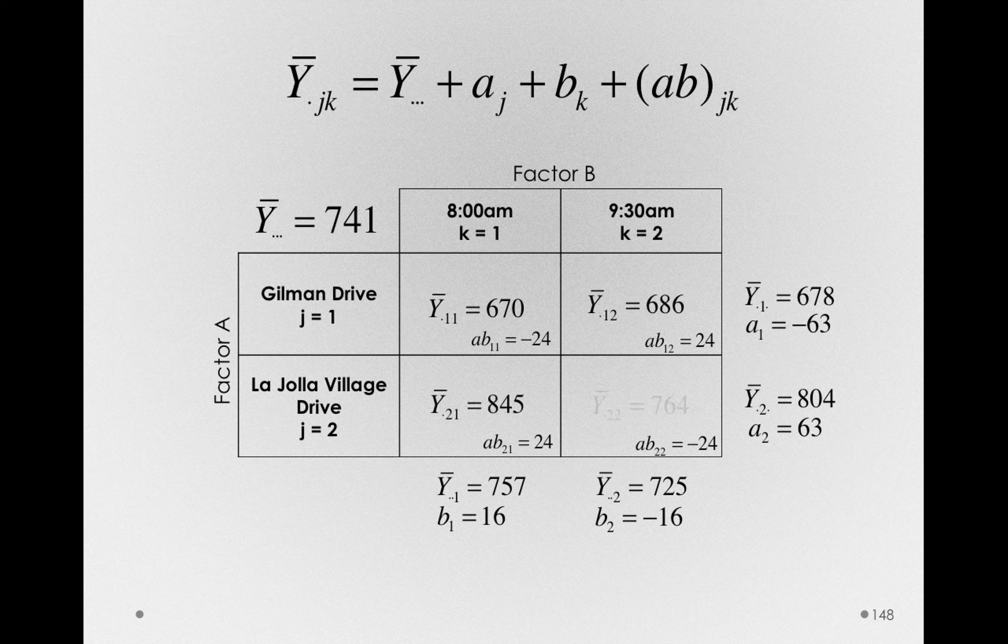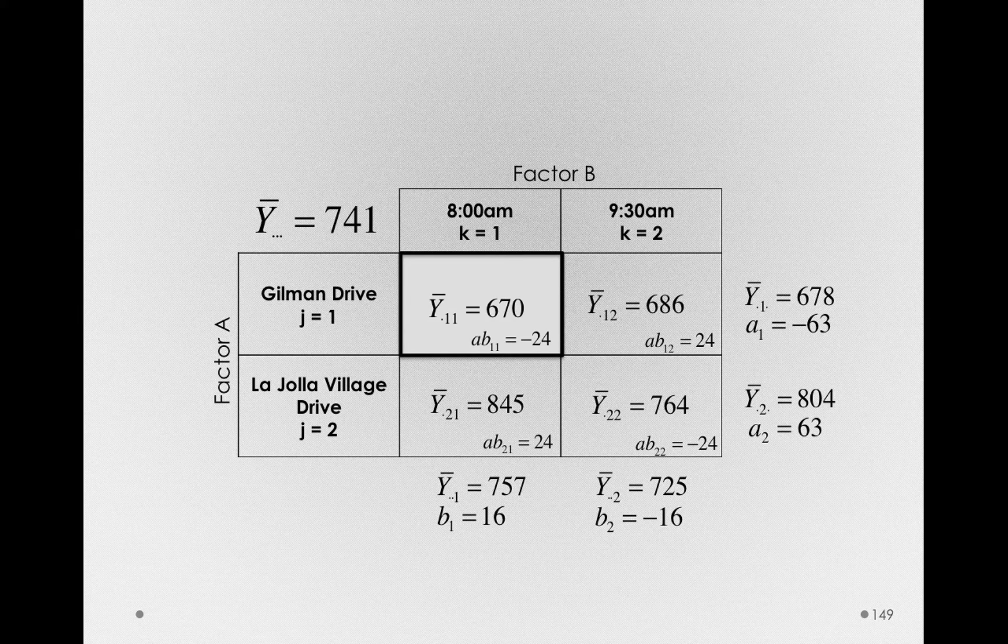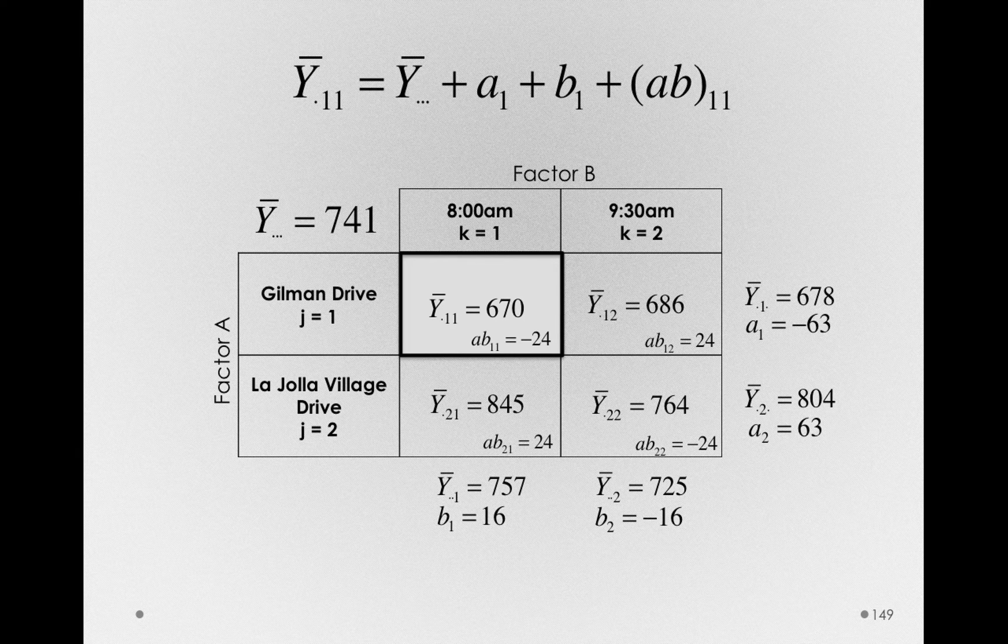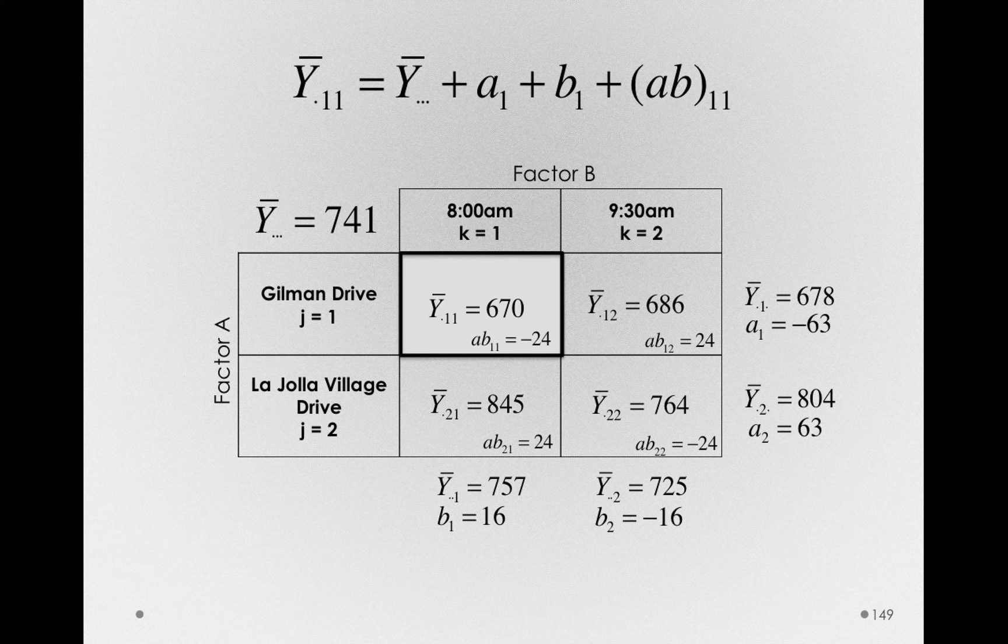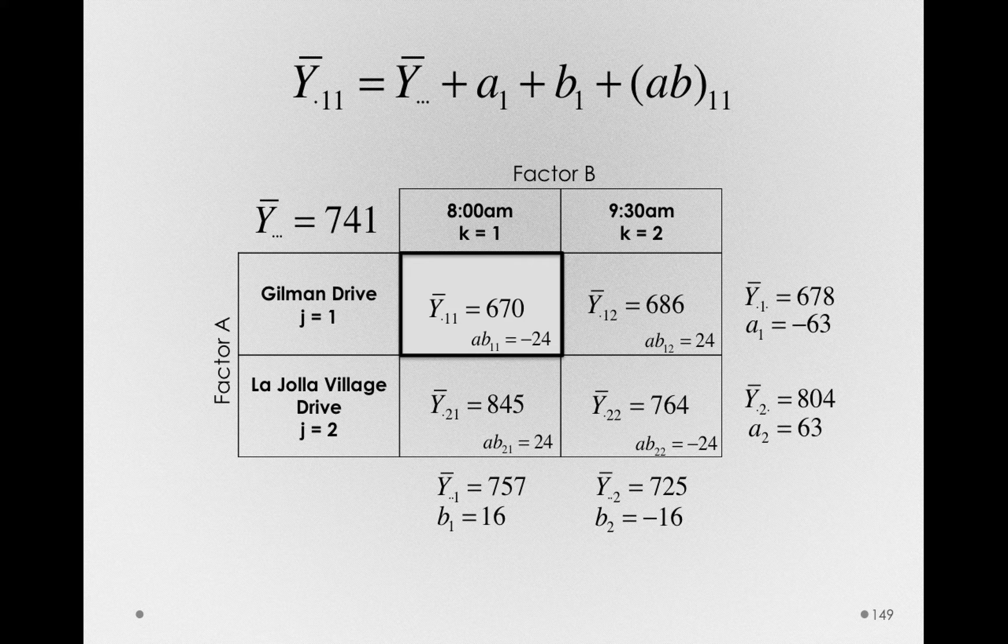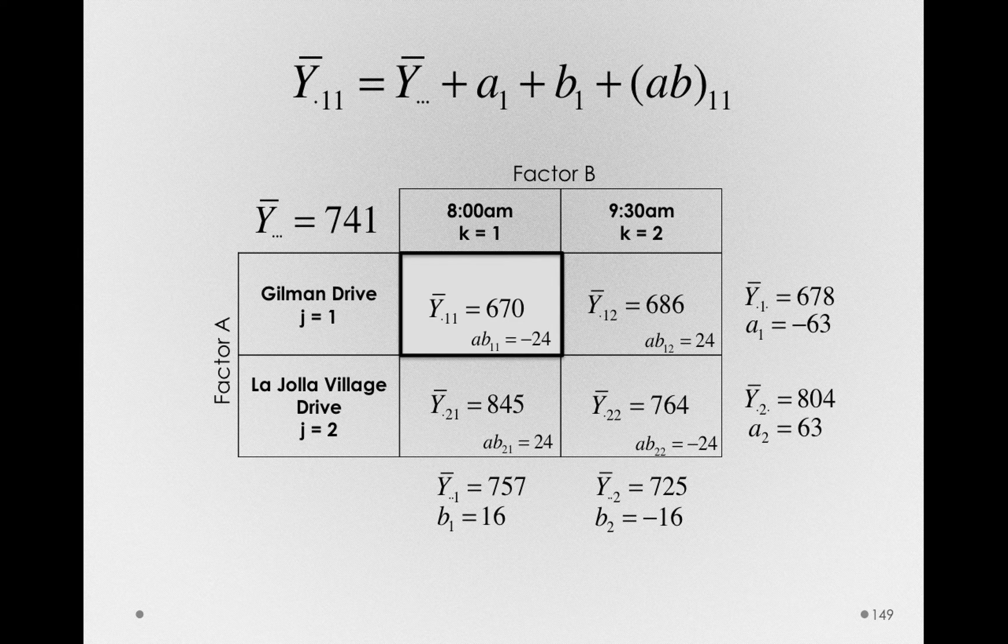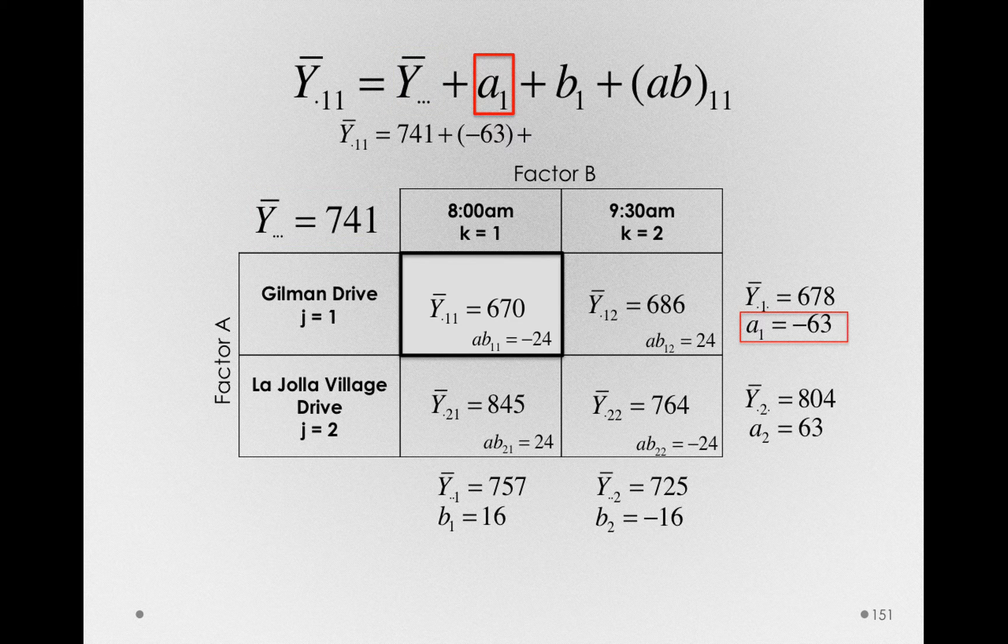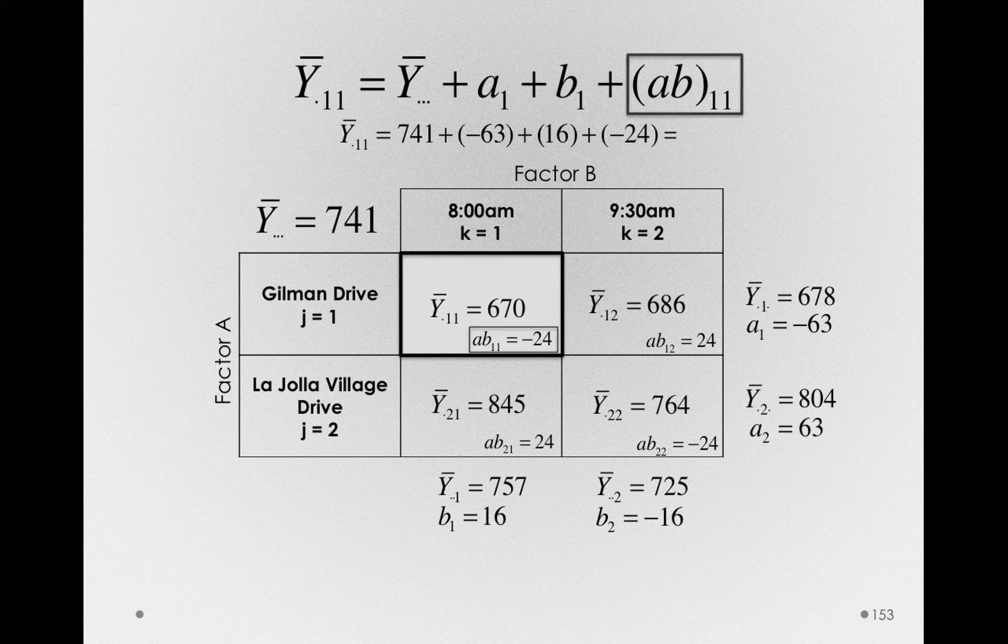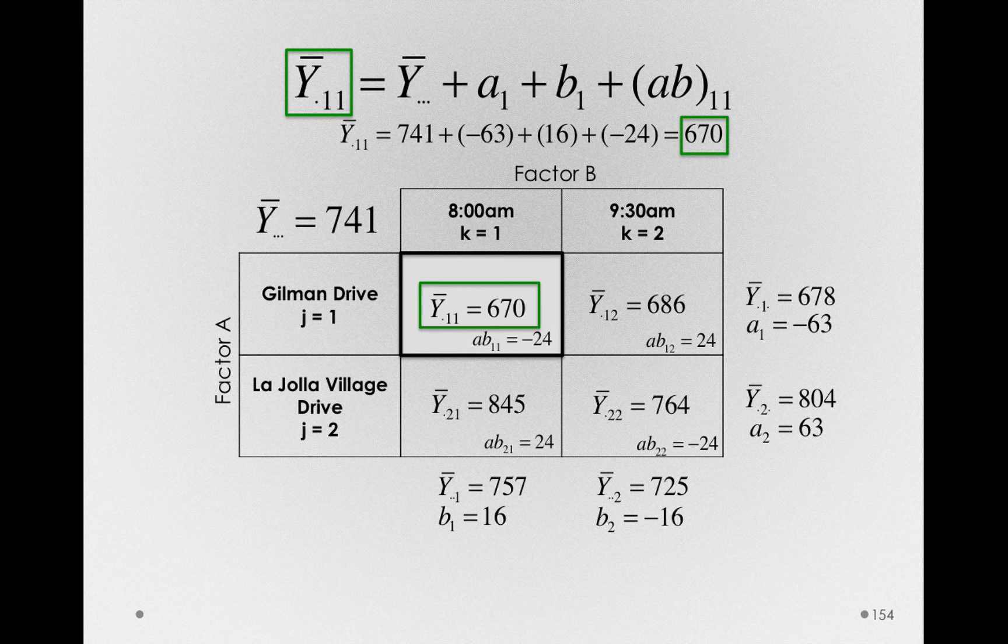So here were the original group means, the things that we're trying to reconstruct on the basis of what we've just developed. So let's start with Gilman Drive at 8am. So we have the mean for Gilman Drive, y bar dot one one, is equal to y bar dot dot plus A sub one plus B sub one plus AB one one. So let's actually do the addition and we should find that we get 670. So 741 plus negative 63, the value of A1, plus 16, the value of B1, plus negative 24, which gives us 670, the mean for Gilman Drive at 8am.